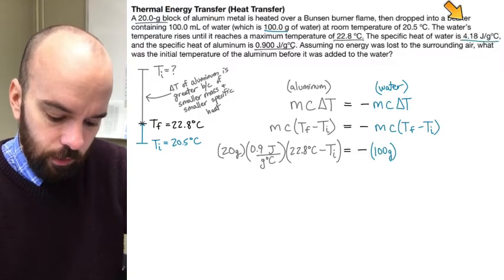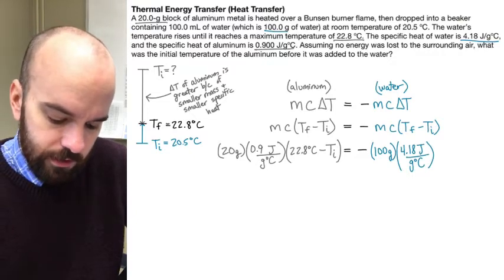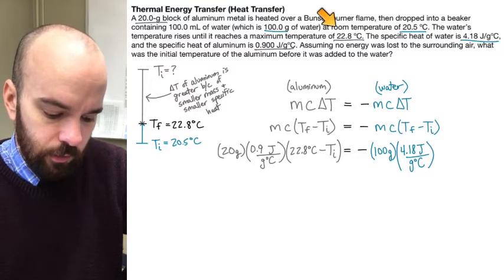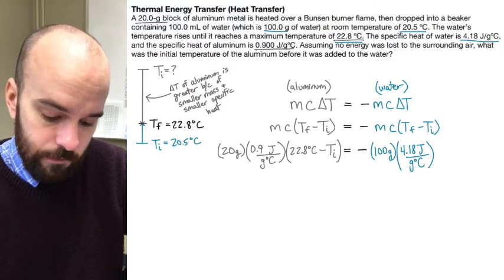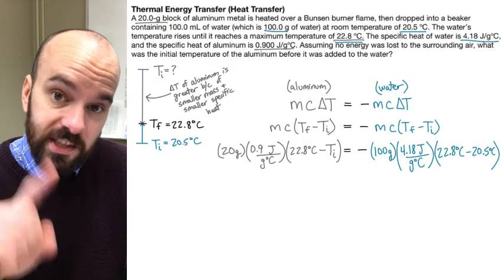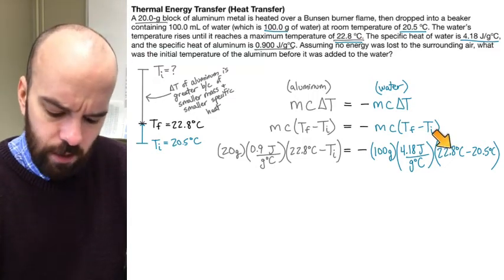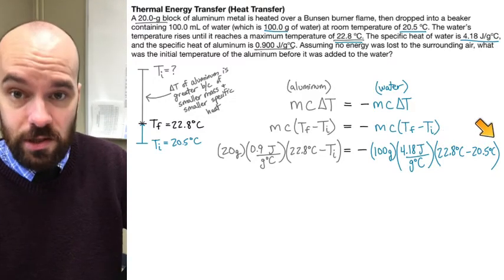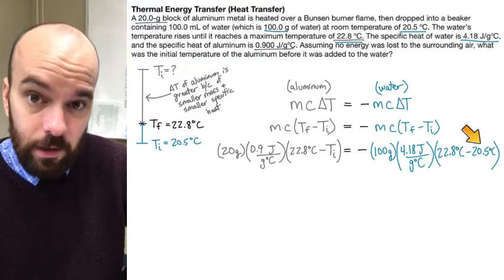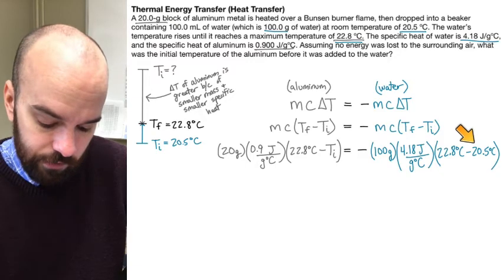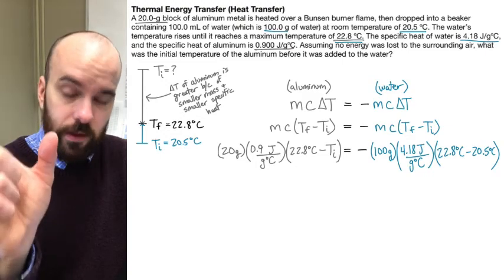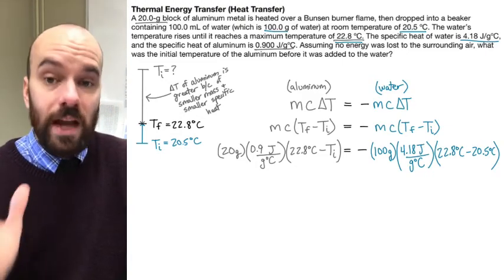The specific heat of water is 4.18 joules per gram degree Celsius. The water starts at 20.5°C and reaches 22.8°C, so we write 22.8 minus 20.5 degrees Celsius. In many AP Chemistry problems we convert Celsius to Kelvin, but we don't here because we're multiplying by a change in temperature — if we converted both values to Kelvin, the change would still be the same number. So we can leave it in degrees Celsius because we're looking at a temperature change, not an absolute temperature.